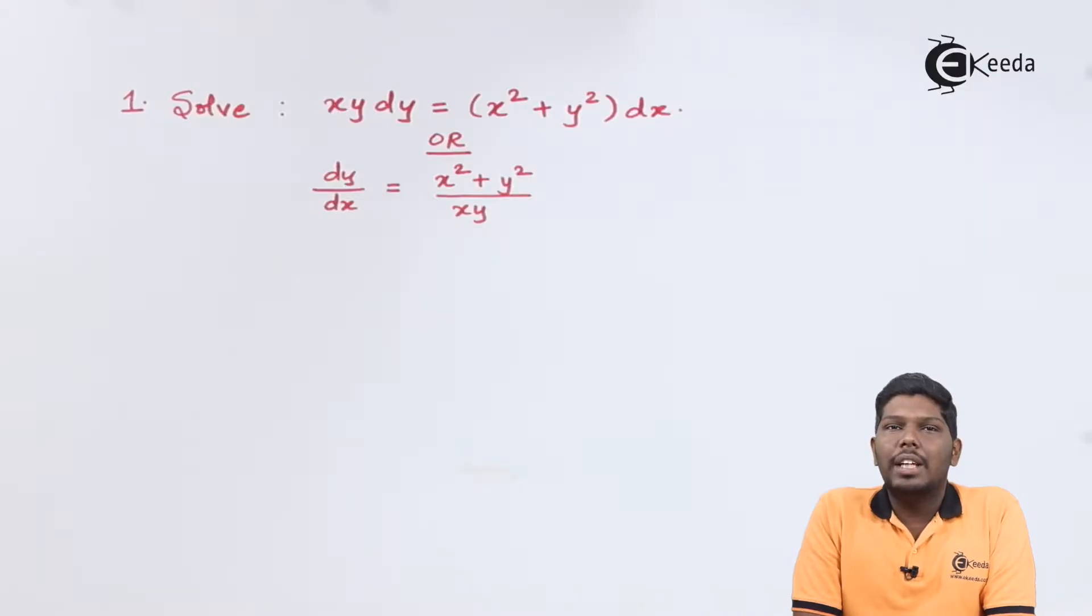In the previous videos we have seen that a function can be solved using variable separable method or variable separable method using substitution. Now in this case, how to identify a homogeneous function? Homogeneous basically stands that the power of any function should be same.